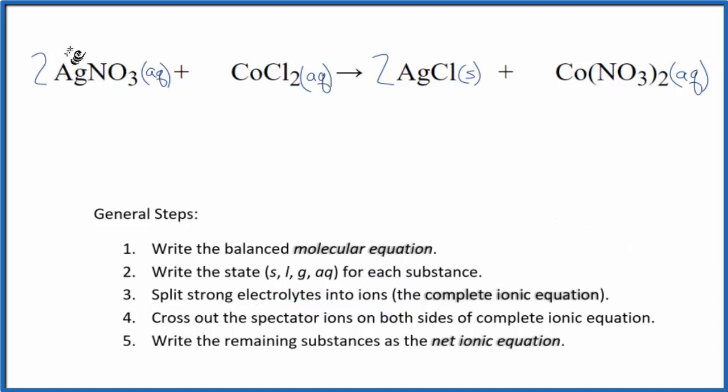So silver is always 1 plus on the periodic table. Nitrate, this whole ion, is 1 minus. So I have two silver ions, 2 Ag+, and I'll write aqueous at the end, I won't write that now, plus I have two nitrate ions, two of those NO3- ions.